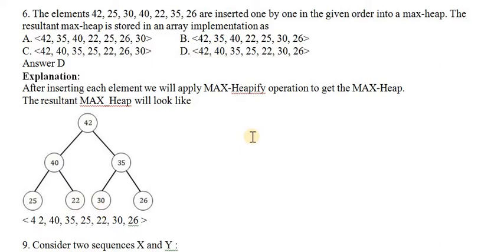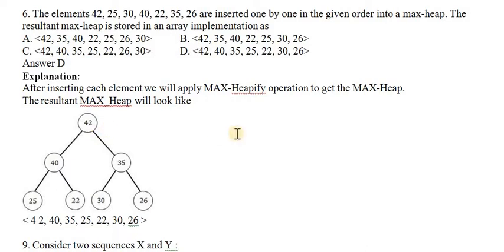That is the max heap. If it is a min heap, it is the reverse process — the root node must have a minimum value compared to its children. So our task is to represent a max heap. First, I want to keep 42, then 25 is coming. I want to explain how to construct this heap tree. Once we place the root node, we follow top to bottom and then left to right.